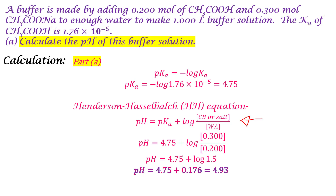Here's our Henderson-Hasselbalch equation. We've already plugged in our pKa value of 4.75. The moles of the conjugate base, sodium acetate, was 0.3 in one liter, so the molarity is 0.3 molar. The molarity of acetic acid was 0.2 molar. We calculate 0.3 over 0.2, which is 1.5, and the log of that is 0.176. Adding that to the pKa value of 4.75, we end up with a final pH of the buffer of 4.93. That's the answer to Part A.